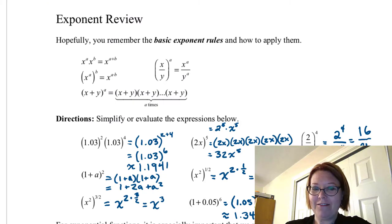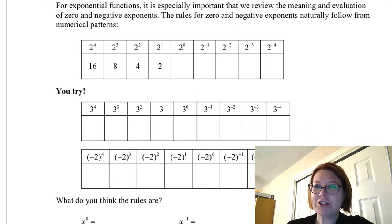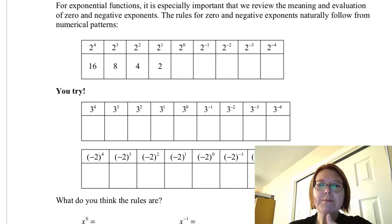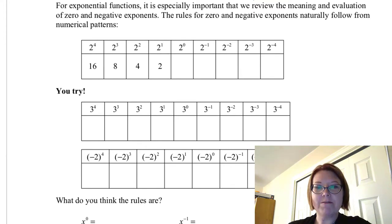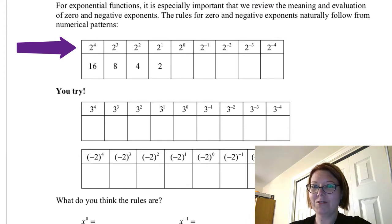Hopefully you've got the hang of those. Now let's move on. For exponential functions, we are going to use a lot of negative powers and zero powers, so let's make sure you understand the patterns that give us the results on these. We're starting with a table of values. On the top row we have two to the fourth, two to the third, two to the second, two to the first, two to the zero, two to the negative first, two to the negative second, two to the negative third, and two to the negative fourth.